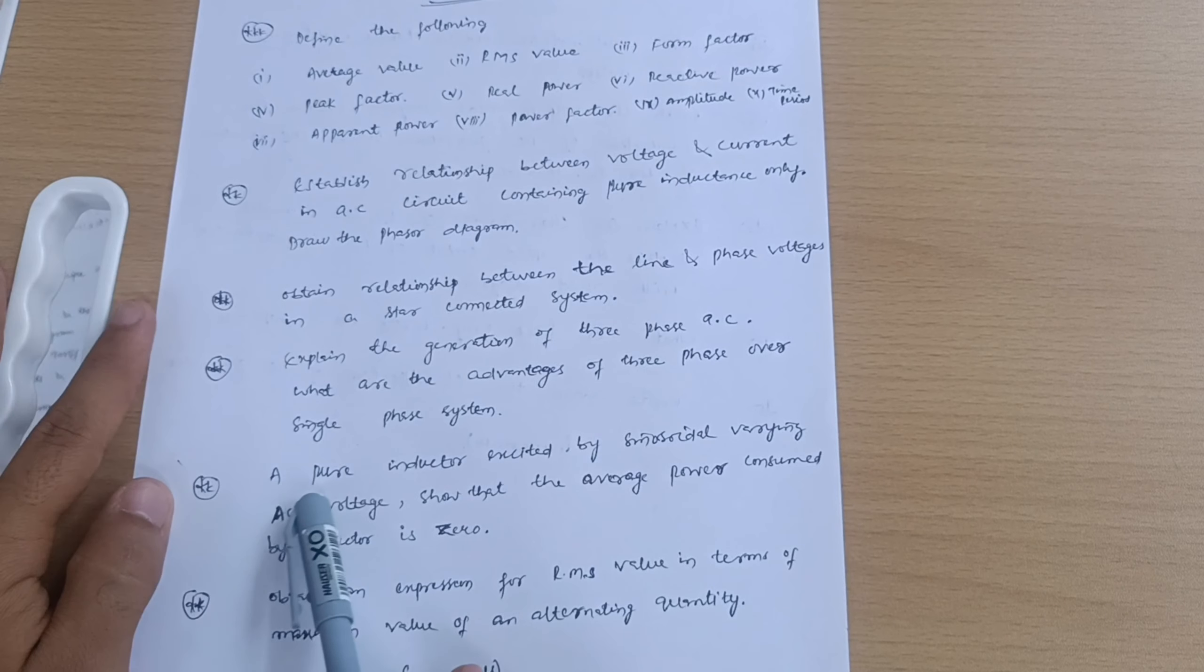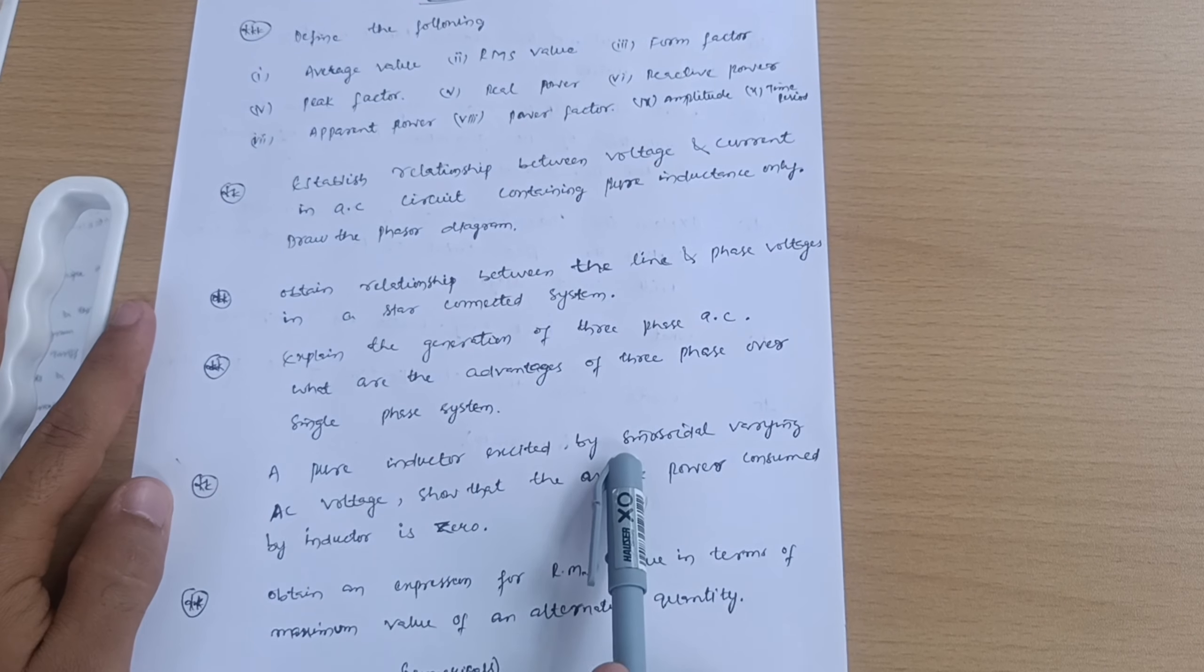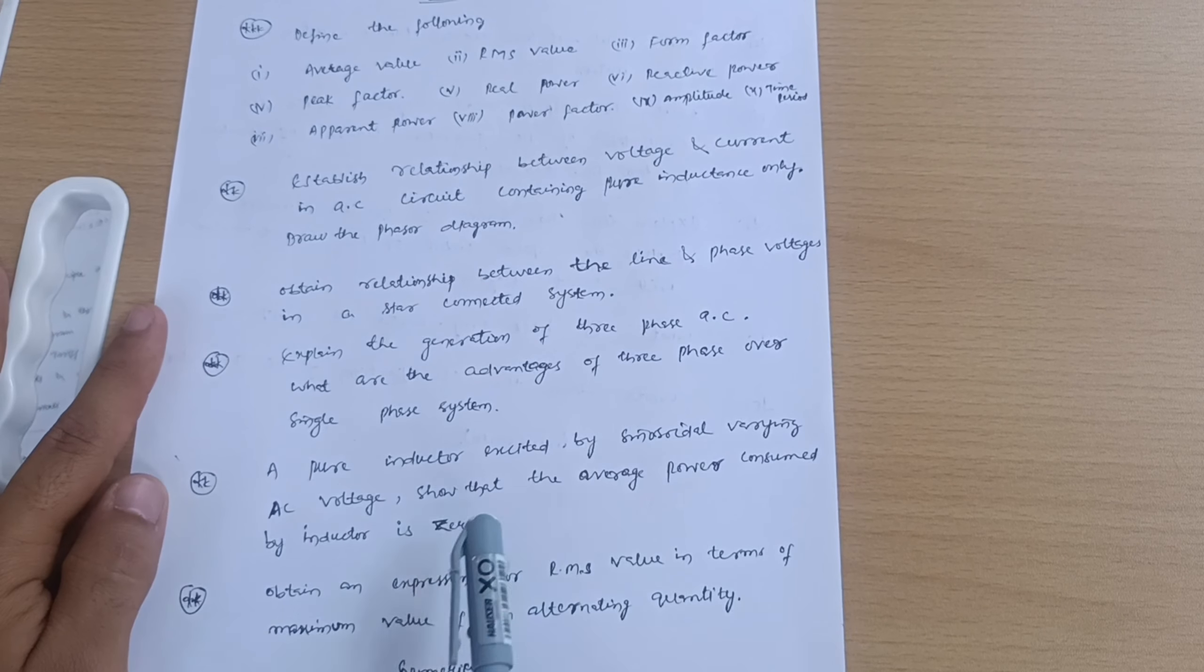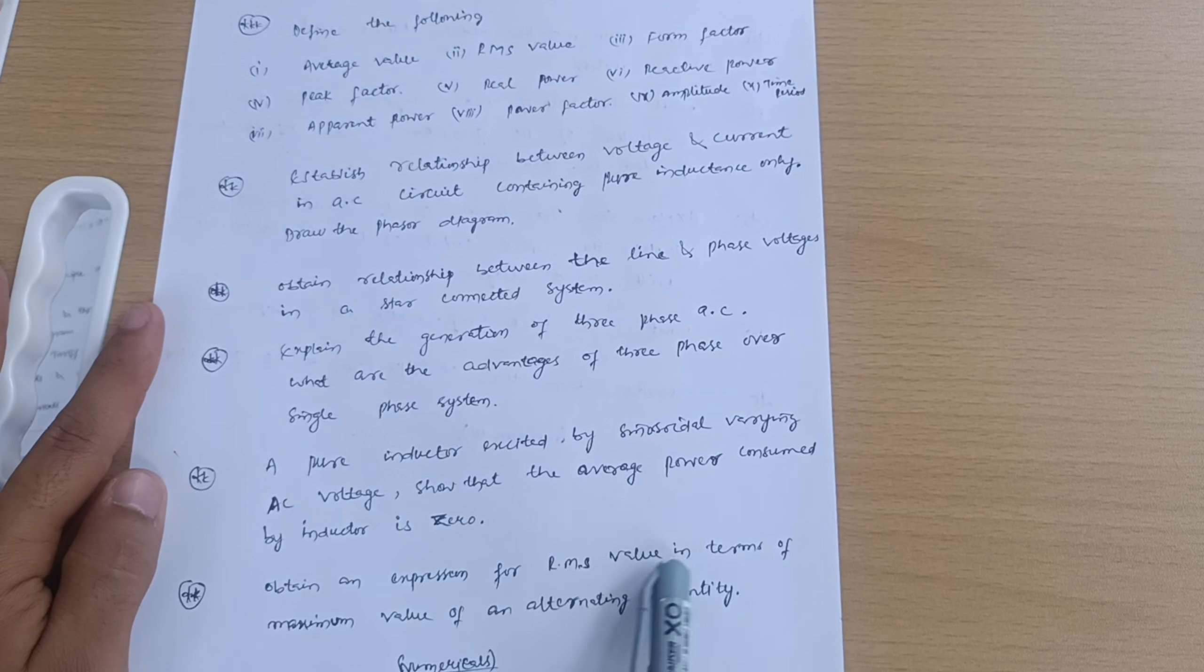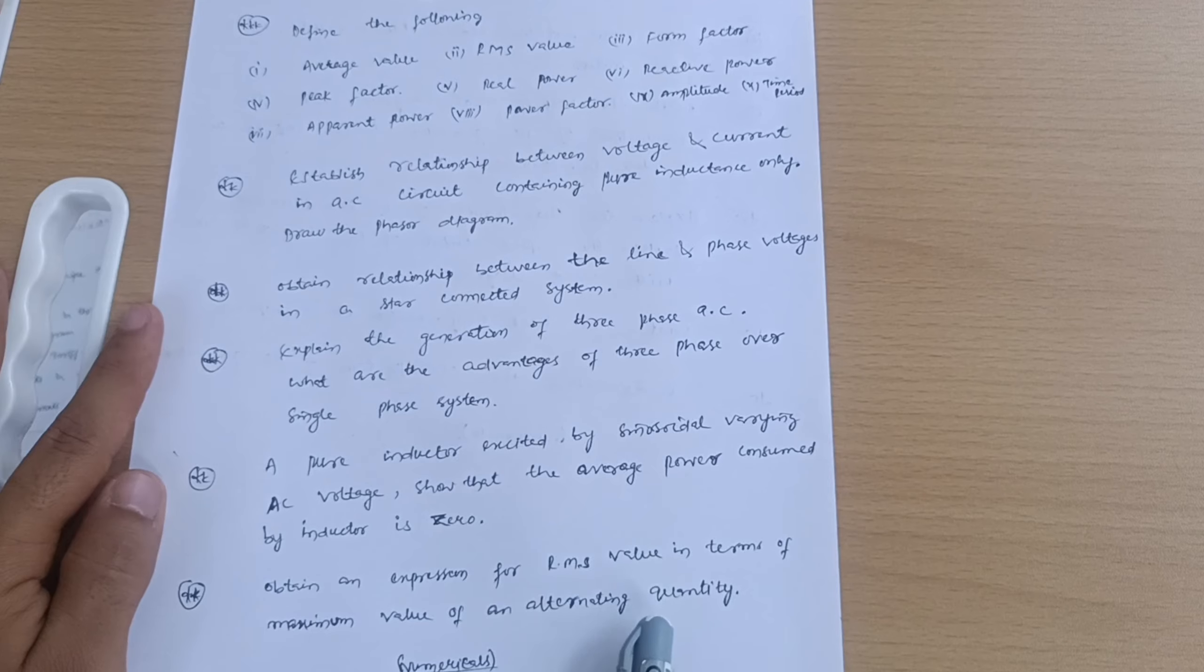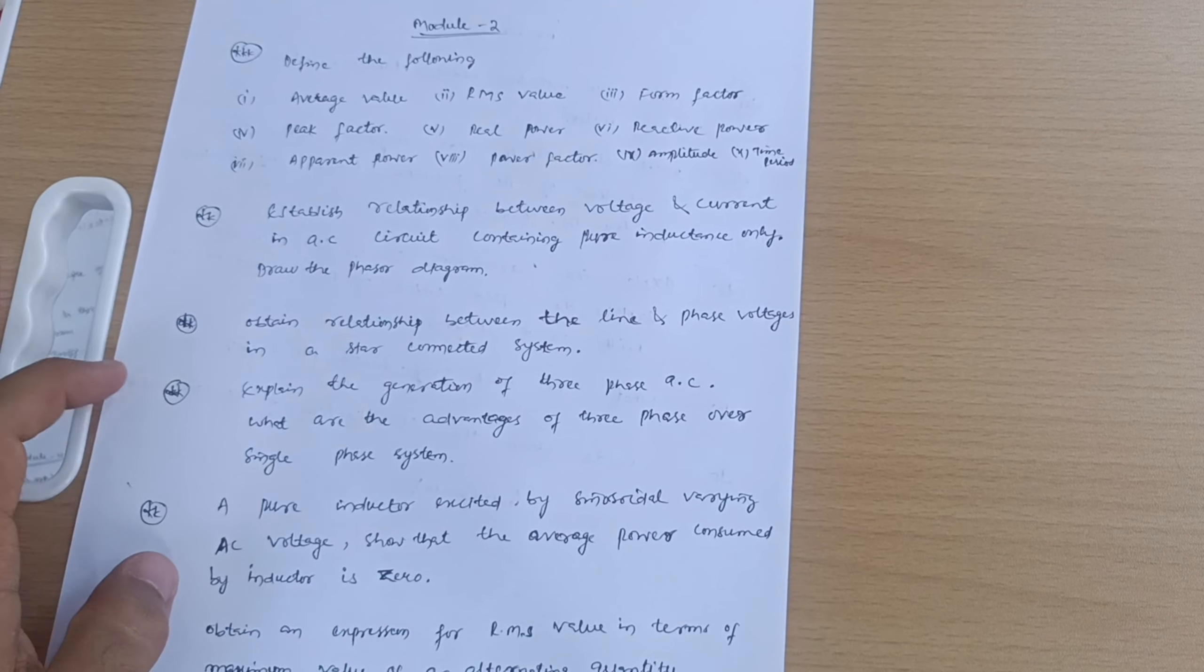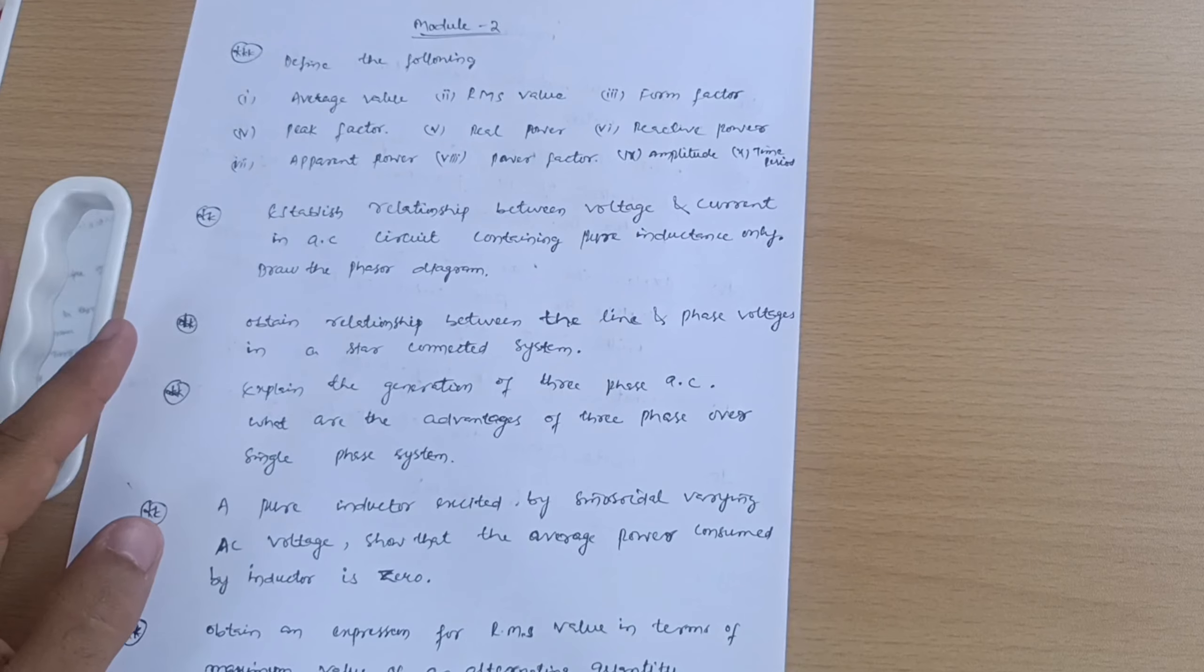A pure inductor excited by sinusoidal varying AC voltage, show that the average power consumed by inductor is zero. Obtain an expression for RMS value in terms of maximum value of an alternating quantity.